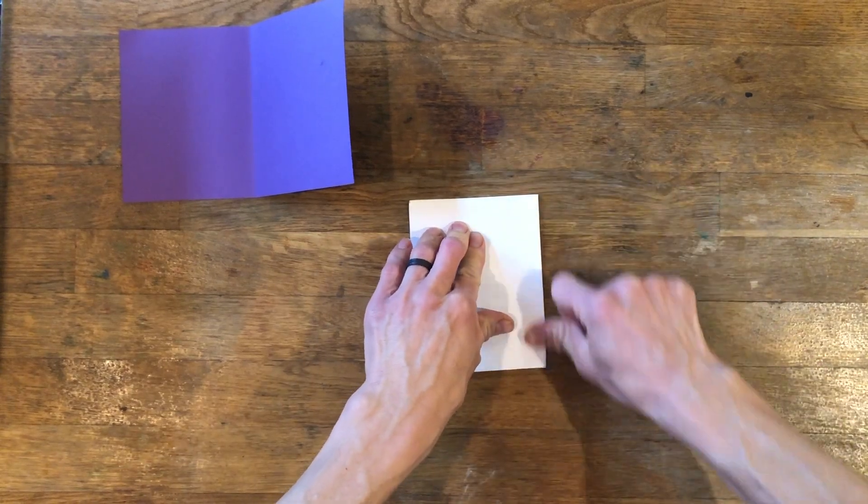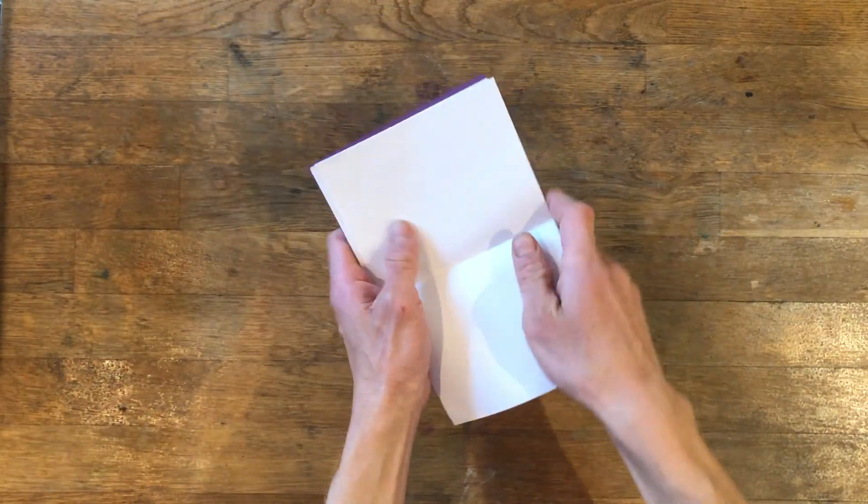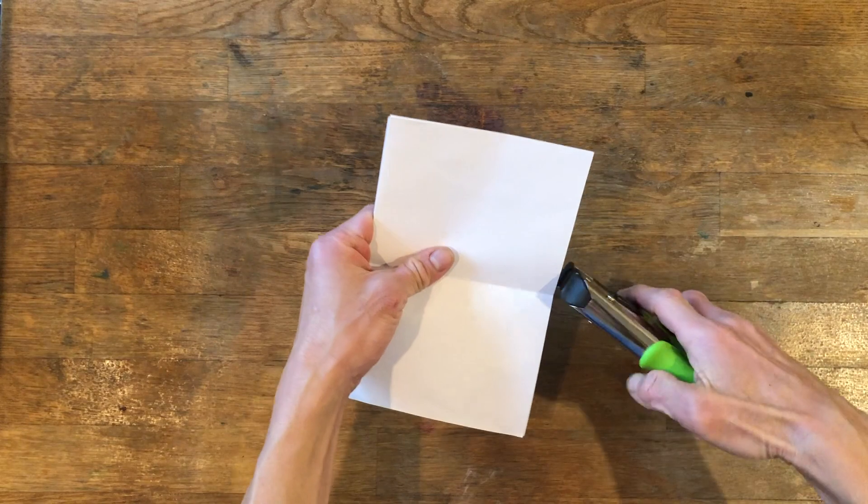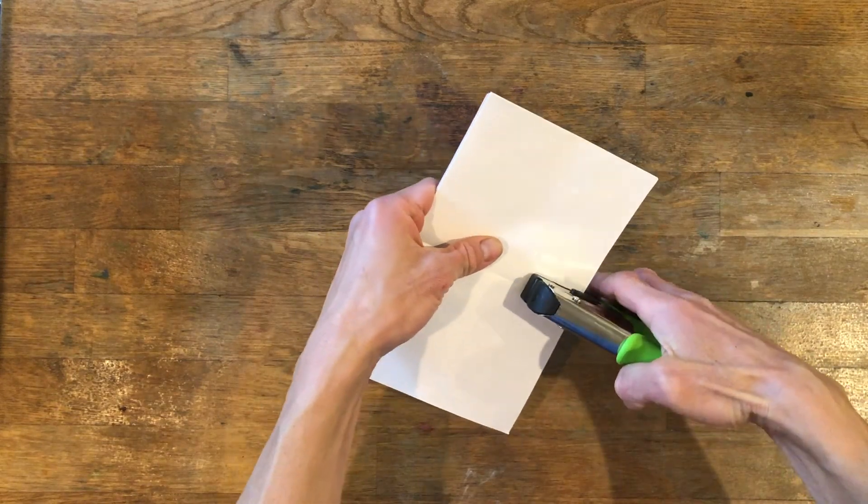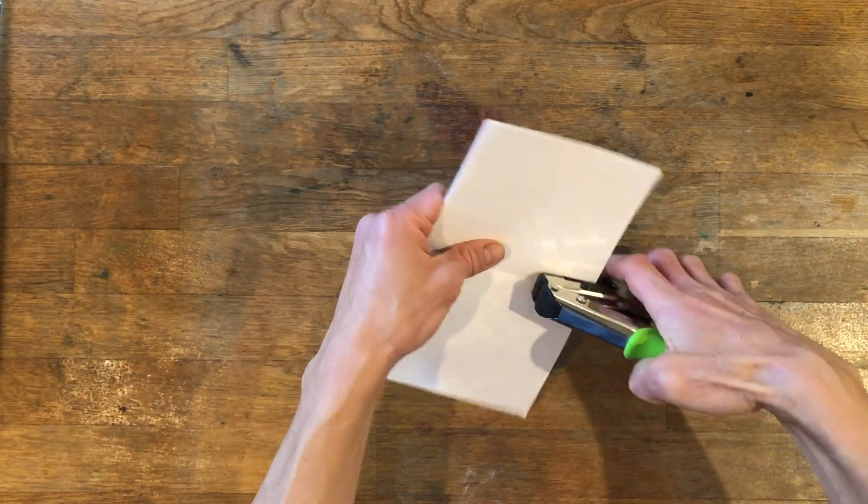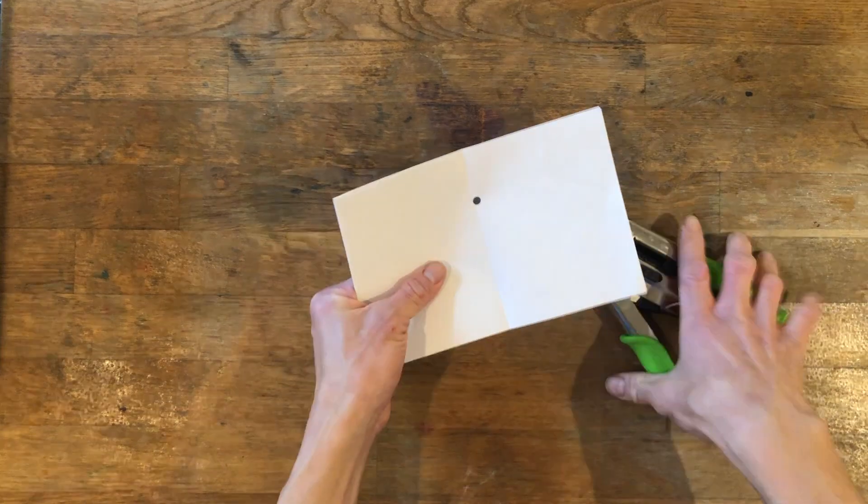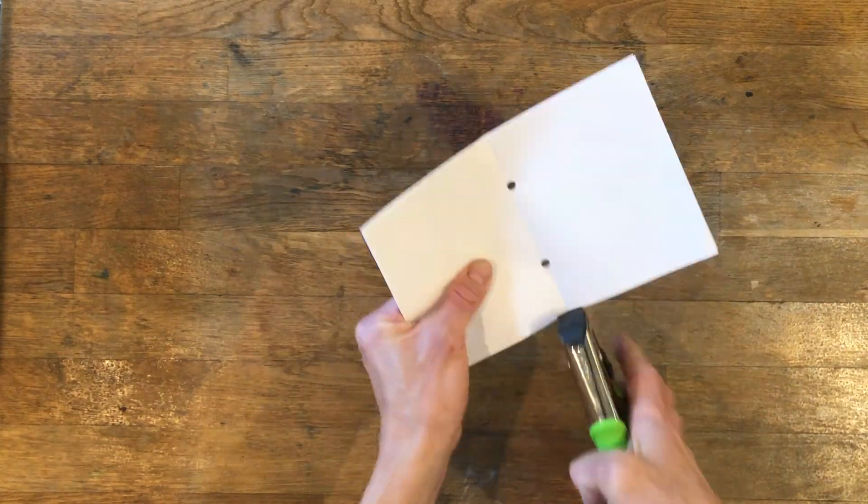We placed the copy paper inside the colored card stock and punched holes using the hole punch in the middle of all the sheets on both the top and bottom of our sheets of paper.